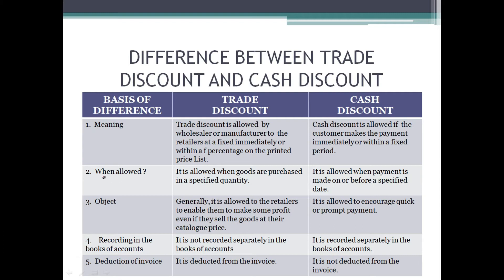Trade discount कब होता है — यह तब होता है जब एक specified quantity में, मतलब bulk में, material purchase किया जाता है। यह listed price पर allow होता है। Cash discount कब allow होता है — जब एक specified period में payment कर दी जाती है। मतलब आज हमने goods खरीदे और एक हफ्ते के अंदर-अंदर payment कर दी, तो specified period में payment हो गई तो cash discount allow हो जाएगा।